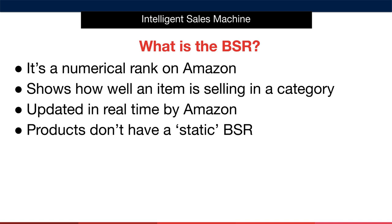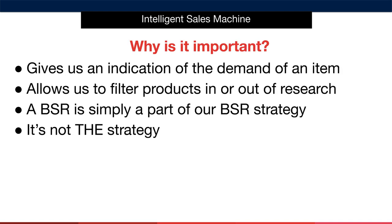In general, the lower the BSR, the more that item is selling in a category. The reason this is important is because it gives us an indication of the demand for the item. It also allows us to filter products in or out of our research, which means we won't research an item that has a BSR beyond our accepted BSR limit, which we'll introduce in just a moment.